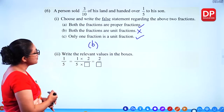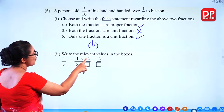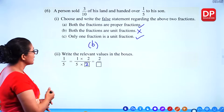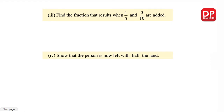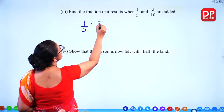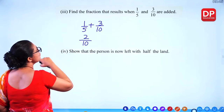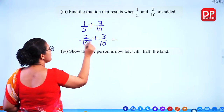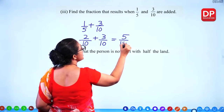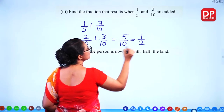Write the relevant values in the boxes. One-fifth is given; convert to another denominator by multiplying both numerator and denominator by 2: 2×1=2, 5×2=10, giving 2/10. Then find the fraction when 1/5 and 3/10 are added: 1/5 = 2/10, so 2/10 plus 3/10 = 5/10. Simplify by dividing by 5: the answer is 1/2.